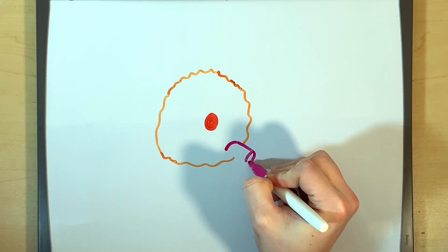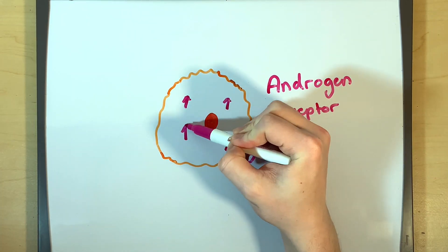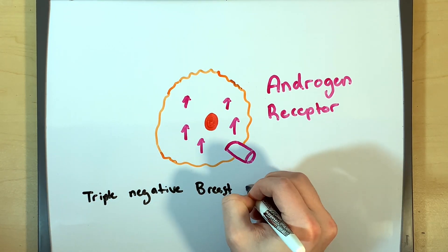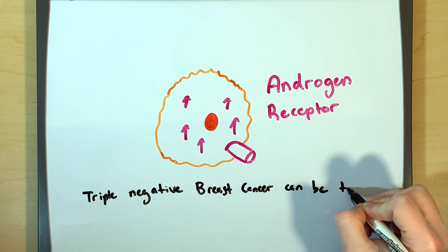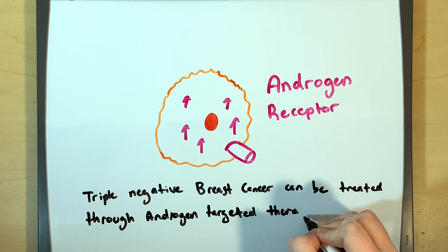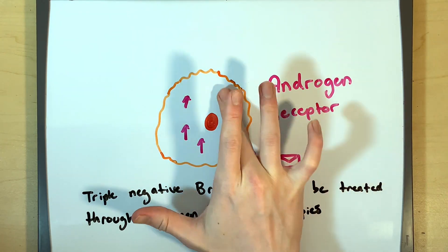That's not to say that all hope is lost for triple negative breast cancer. Recently, another mailbox, the androgen receptor, has been found to be associated with triple negative breast cancer. Hormone therapy using the androgen receptor is a hot topic in breast cancer literature right now, and current therapies are being developed to treat triple negative breast cancer through the androgen receptor.